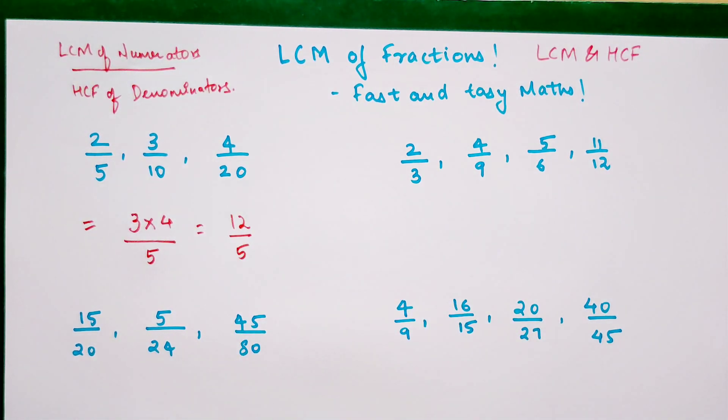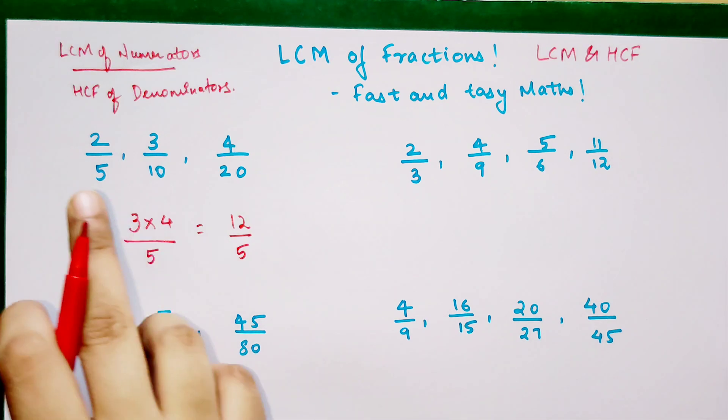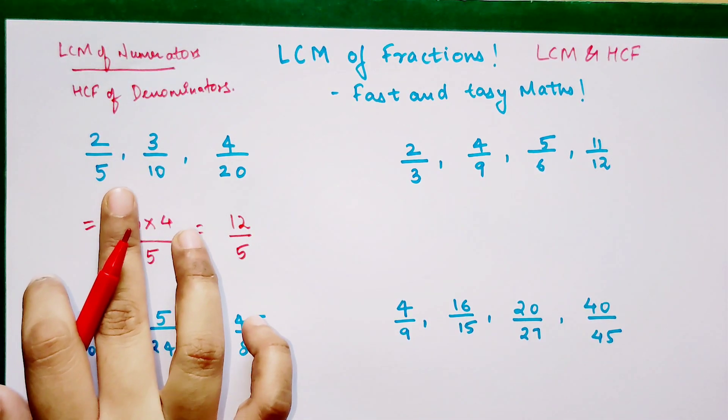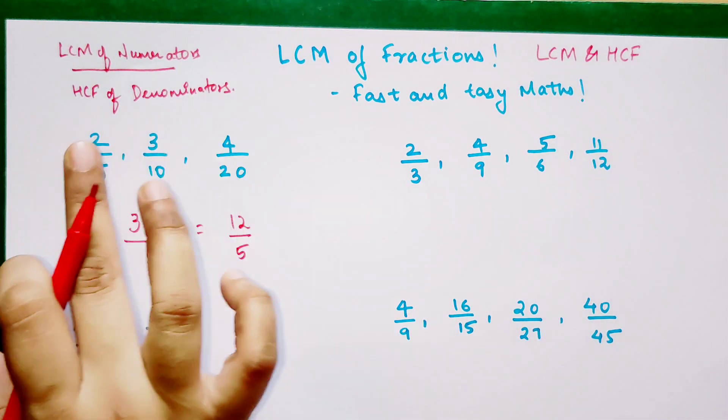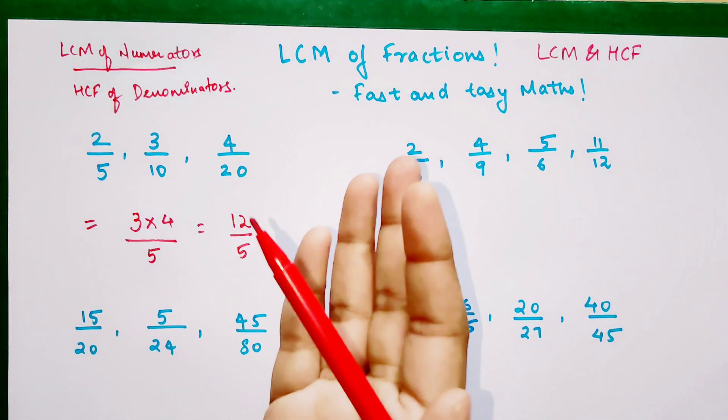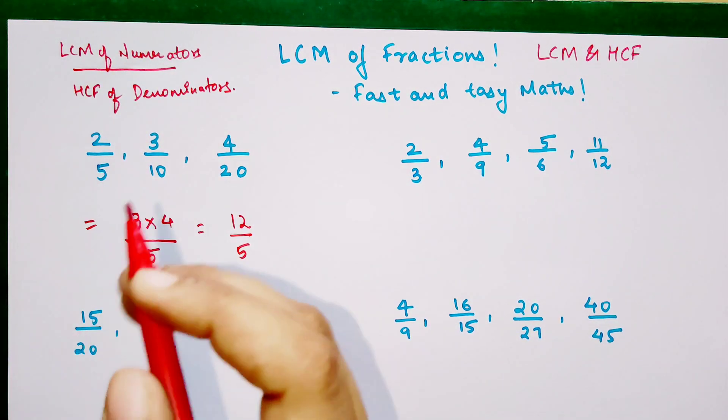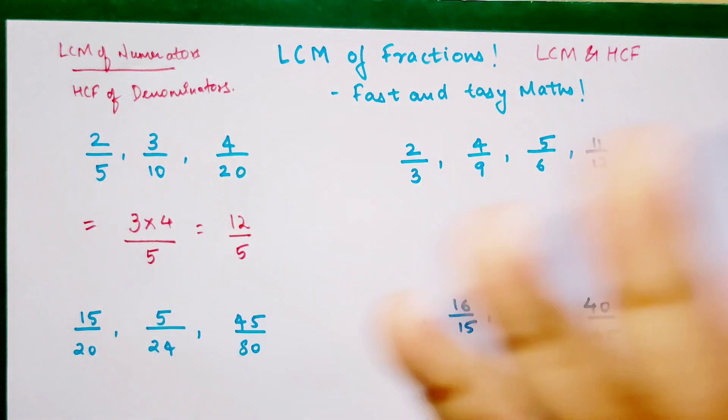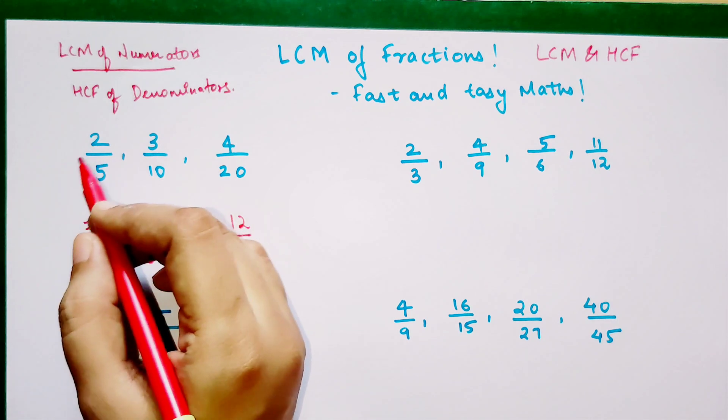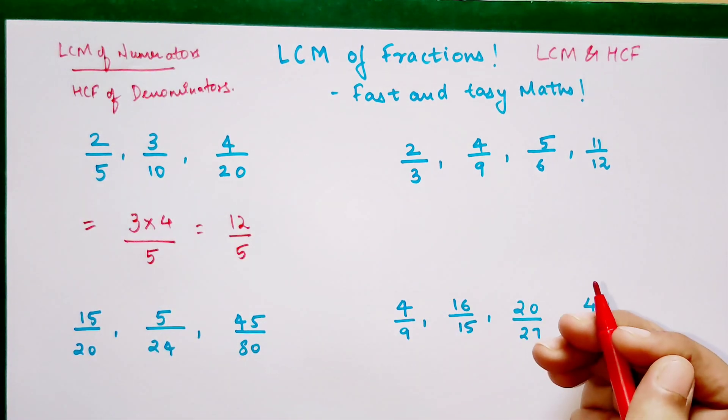Now if you have doubts that while taking the LCM why didn't I take 2? I did not take 2 because 4 is the number which is already coming in 2's table. If you have any number which comes in another number's table, then you just need to take the previous number which is coming in the table and ignore the smaller number.